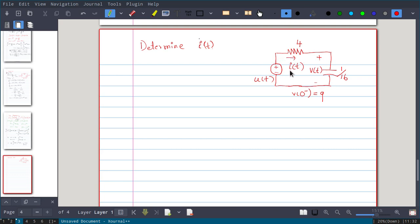First we will write using KVL the expression in time domain. Using KVL, u(t) is equal to 4 times i(t) and the voltage across this capacitor.